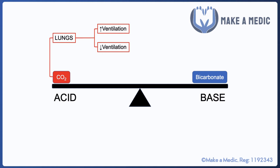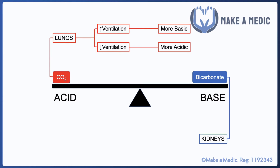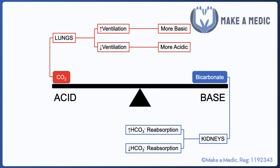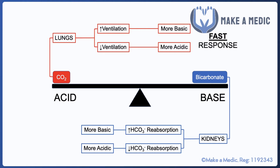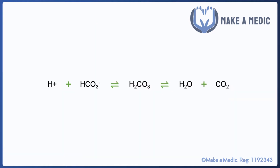The main acid in our body is carbon dioxide and the main base is bicarbonate. Carbon dioxide is regulated by the lungs — by altering minute ventilation up or down, we can make our blood more basic or more acidic by changing the retention of carbon dioxide. Bicarbonate, on the other hand, is regulated by the kidneys, which can adjust the rate at which they reabsorb bicarbonate. The key difference is that the lungs can react very fast, whereas the kidneys take more time.